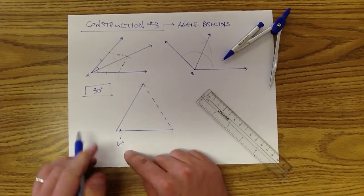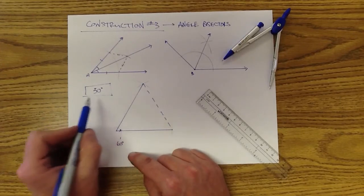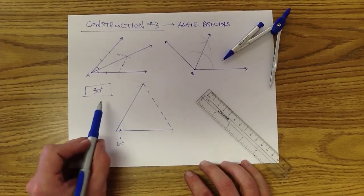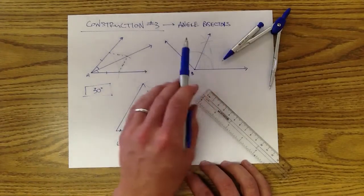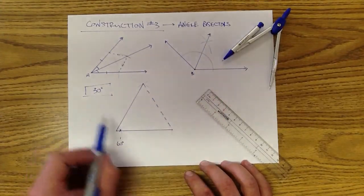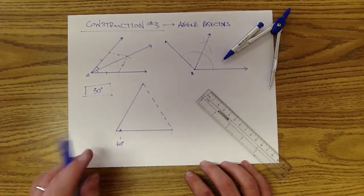Alright, now this is helpful because we want to create a 30 degree angle. If we know this is 60, we can use the idea of an angle bisector to cut this angle in half, which will give us a 30 degree angle.